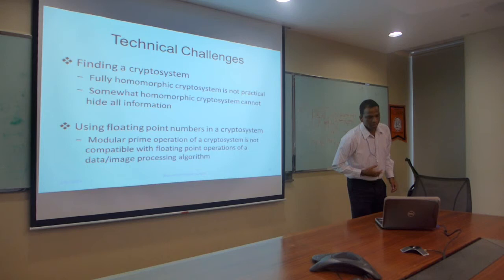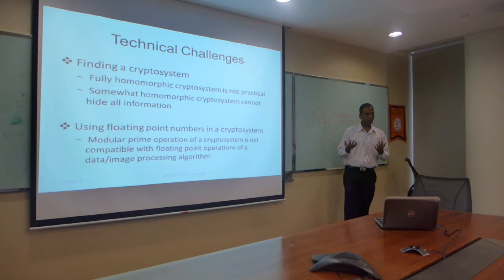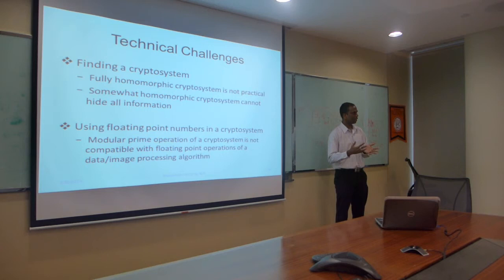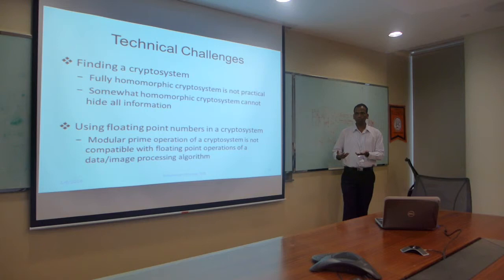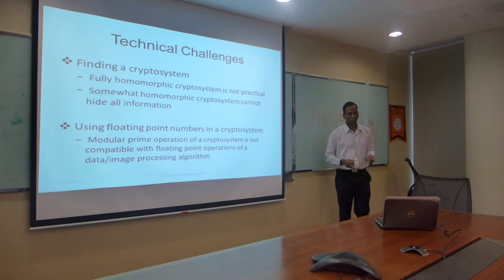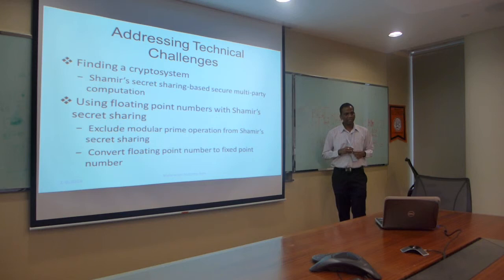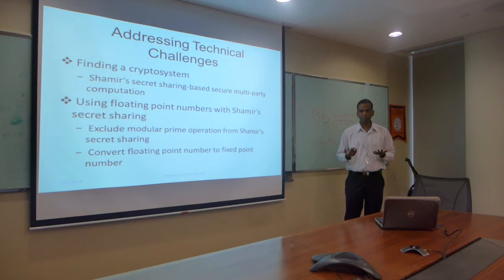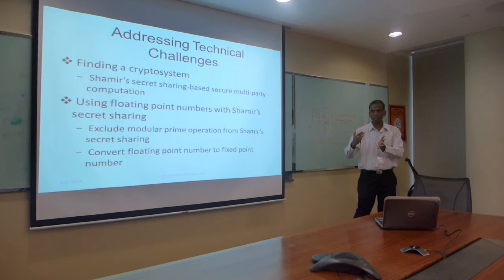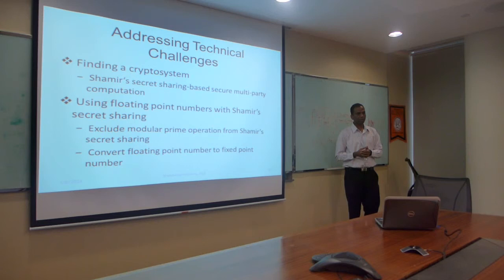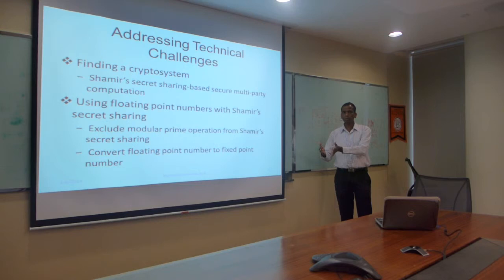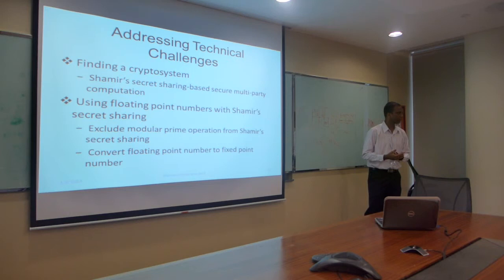Another technical issue is using floating-point numbers in a cryptosystem, because image processing algorithms perform floating-point operations. But a cryptosystem generally works on finite fields using modular prime operations, and modular prime operations are incompatible with floating-point operations. The question is how to use floating-point operations within the finite field that a cryptosystem requires. I address these technical challenges using Shamir's secret sharing-based secure multi-party computation. Shamir's secret sharing is homomorphic to addition and scalar multiplication, so I use it to hide addition and scalar multiplication operations.